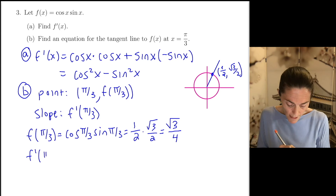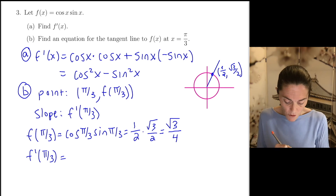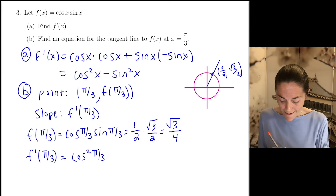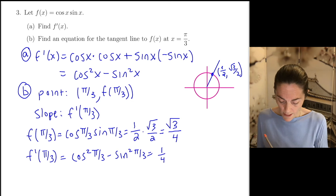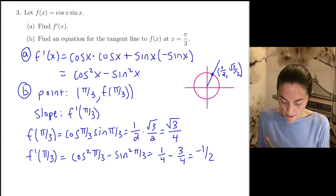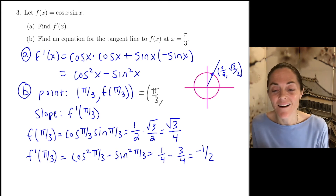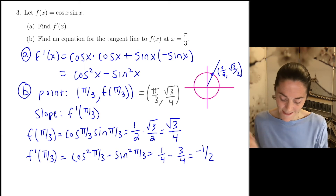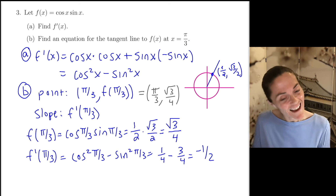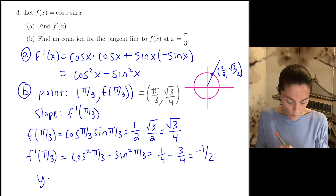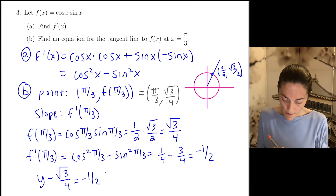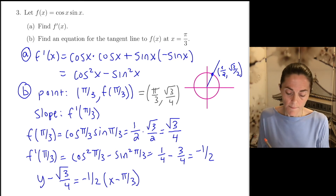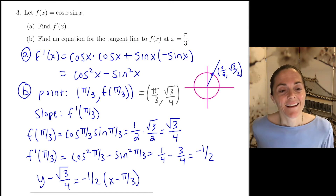The derivative at pi over 3 is cosine squared(π/3) minus sine squared(π/3). Cosine squared is 1/4, and then we have minus 3/4. So this is negative 1/2 — this is my slope. We have the point pi over 3 comma square root of 3 over 4. Now we have everything we need: a point and a slope. So I can write down an equation of the tangent line: y minus y1 equals m times x minus x1. This is the answer to number 3B.